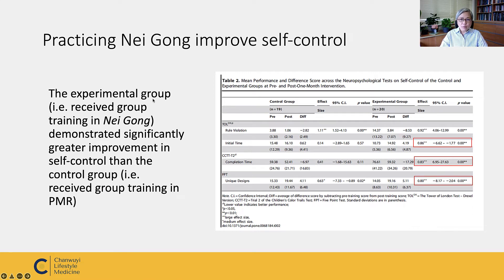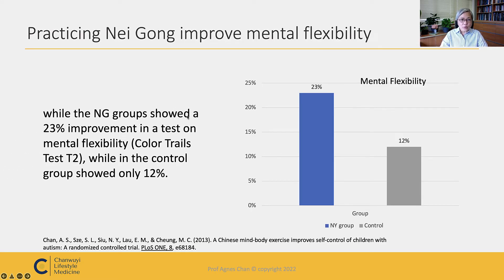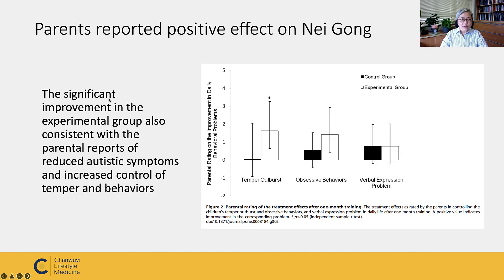The experimental group — children who learned neigong — demonstrated significantly greater improvement in self-control than the control group. The neigong group showed 23% improvement on a test of mental flexibility, while the control group showed only 12%. This significant improvement was also consistent with parents reporting reduced autistic symptoms and increased control of temper and behavior. The graph shows the difference between the control group and the experimental group.